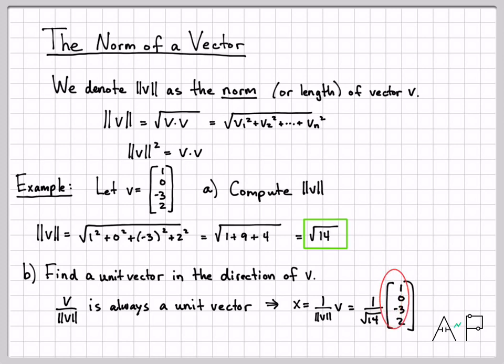That would be our starting vector (1, 0, -3, 2) divided by √14, which is the same as multiplying by 1/√14. This, I claim, is a unit vector, and the direction of that unit vector is in the direction of v, because the vector v is right there.